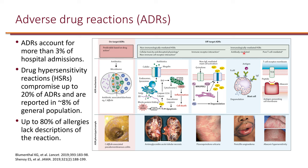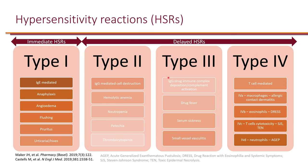When the immune system is involved, it's useful to think about whether antibodies or T cells are mediating the reaction. In general, we think of hypersensitivity reactions in four types. Type 1 is the immediate hypersensitivity reaction — by immediate, we mean within an hour. It is mediated by IgE, specifically immunoglobulin E, and can manifest as anaphylaxis, angioedema, flushing, pruritus, urticaria, and hives.